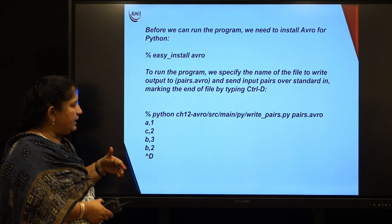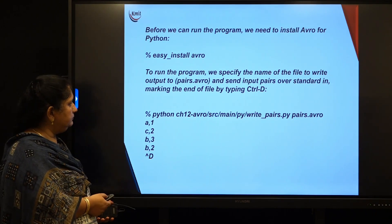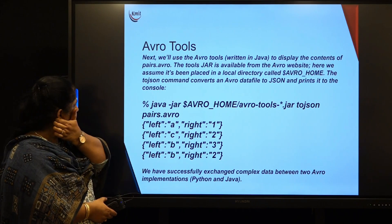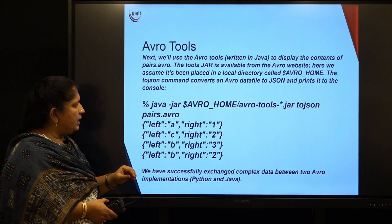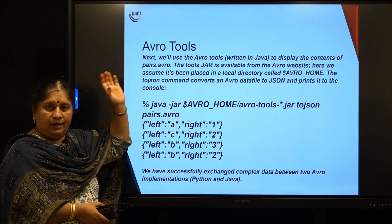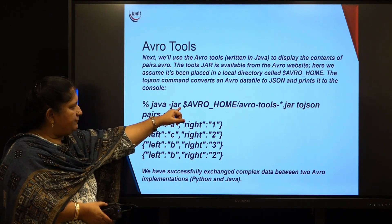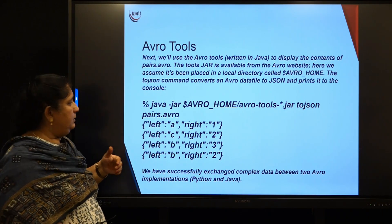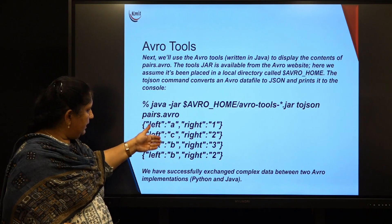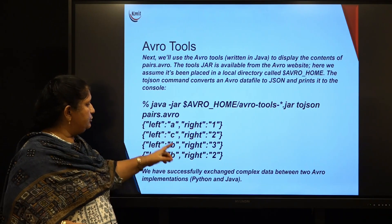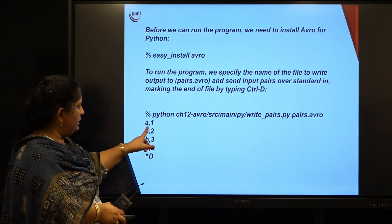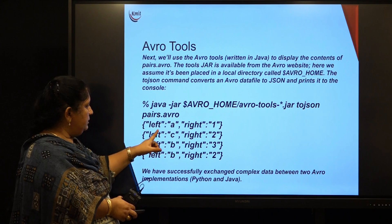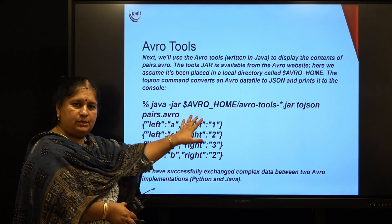Once you execute the program, it shows the string pairs that have been written into the file. When it reaches end of file, it shows a control-D marker. Similarly, you can use Avro tools to display the contents. Simply, I am using the Java jar file to execute that program. The program was written in Python, and I am using the Java jar command to execute pairs dot Avro. The file was written using Python into an Avro file, and the same can be accessed using Java, showing the leftmost and rightmost strings. The pairs a1, c2, b3, b2 — written in Python — are accessed in Java as a1, c2, b3, b2.